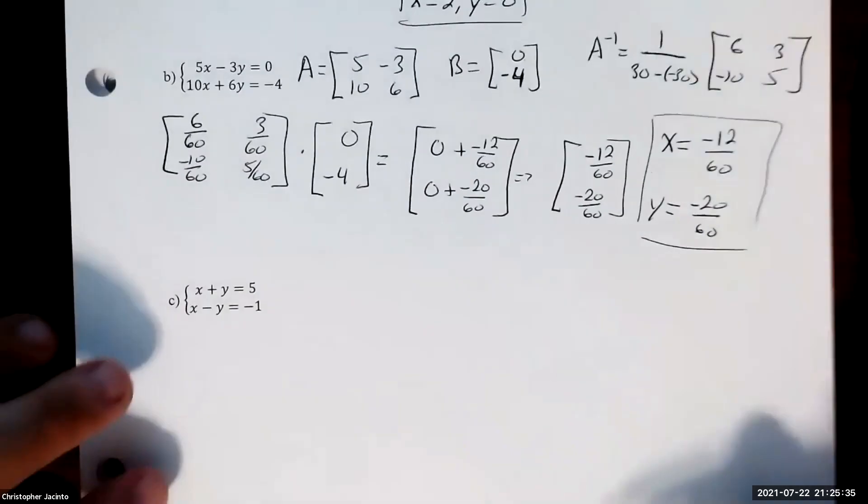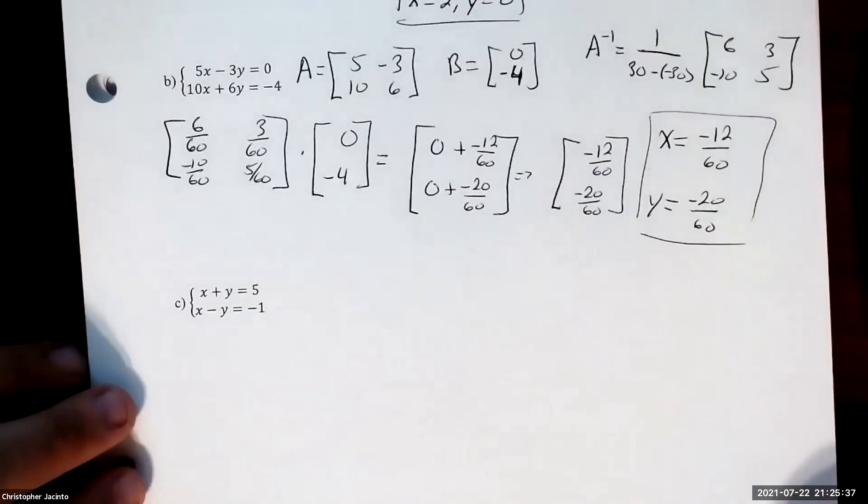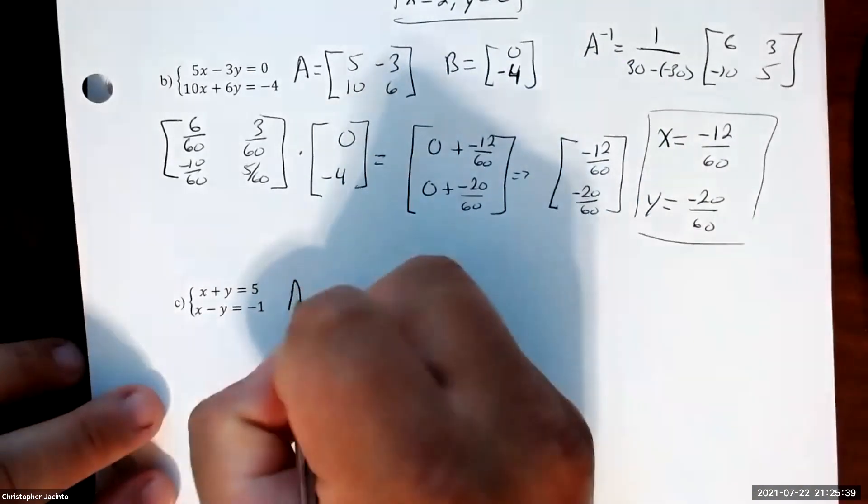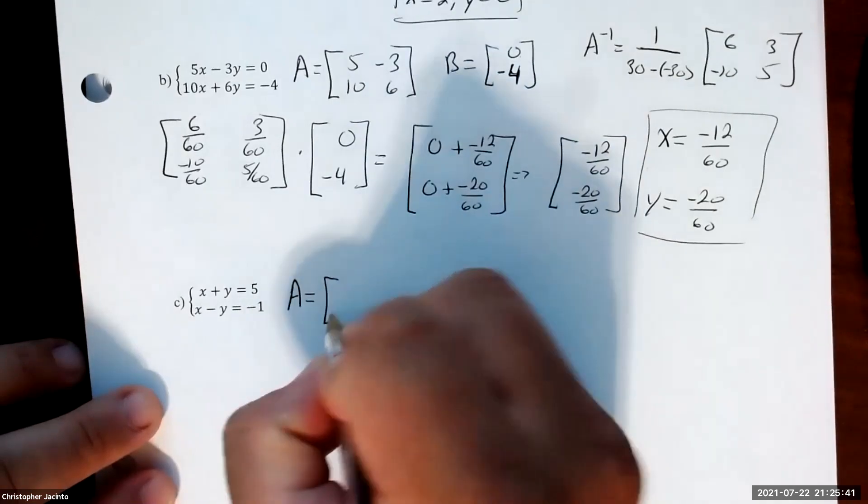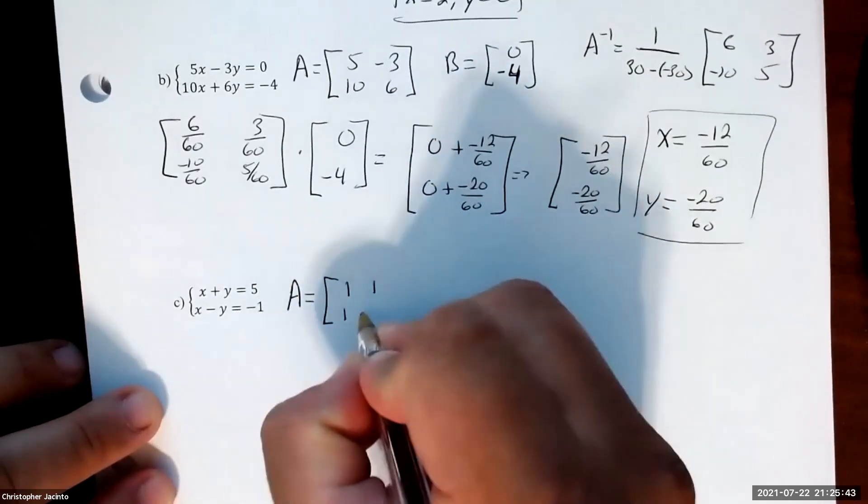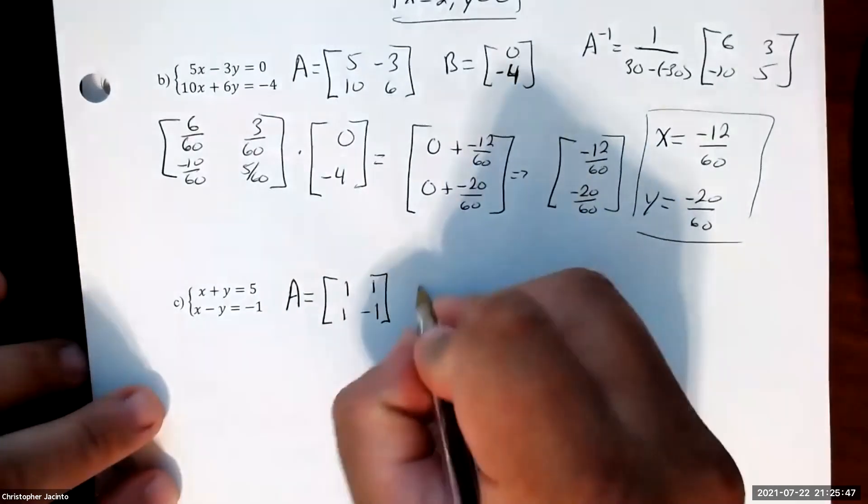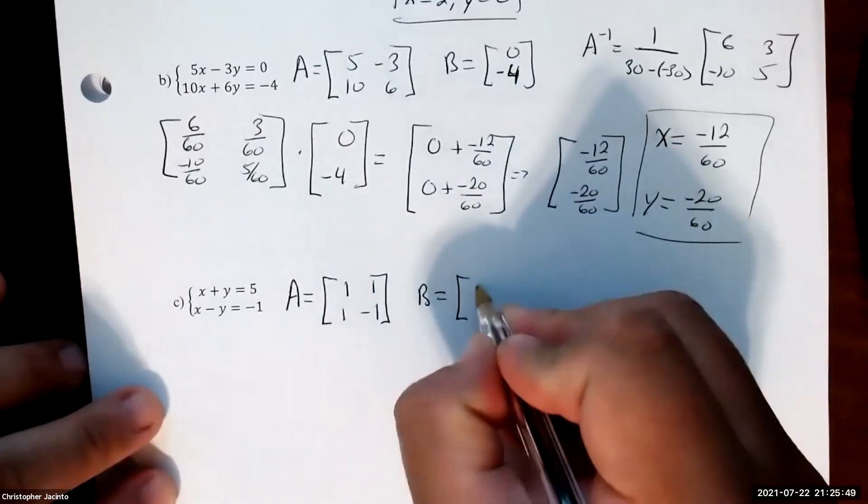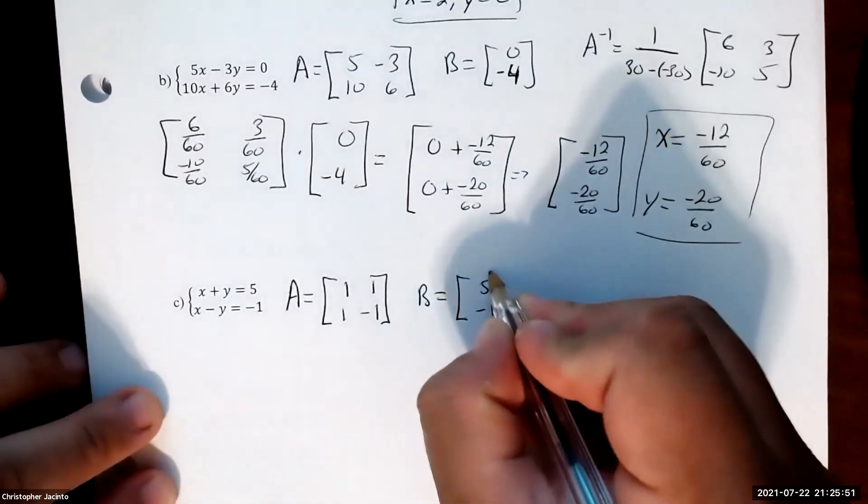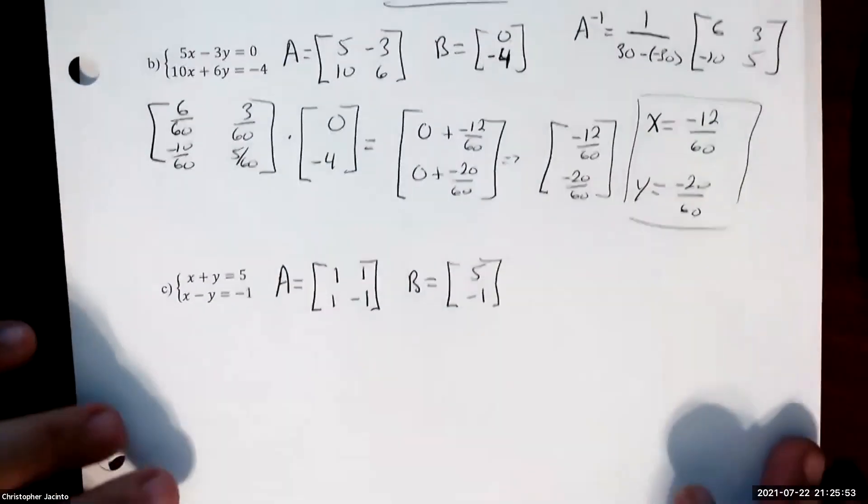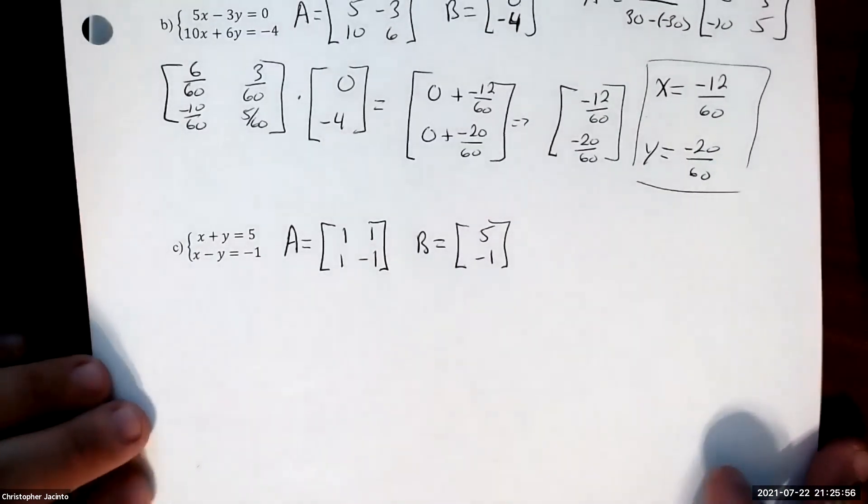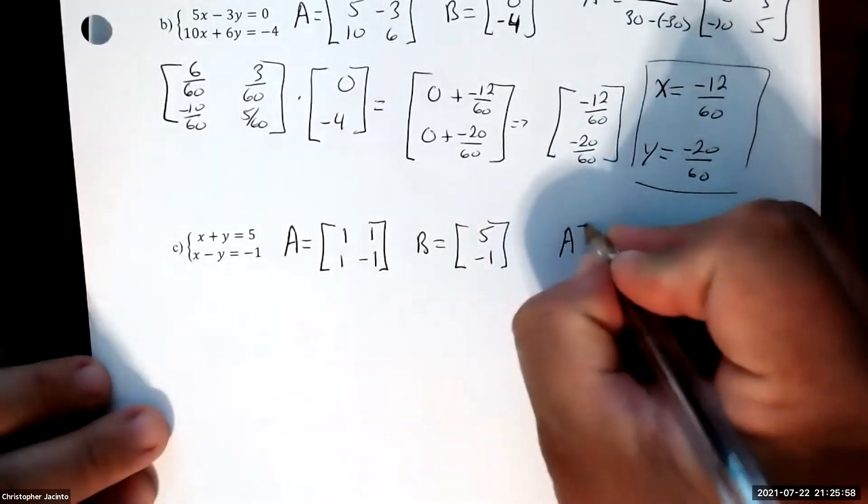Alright, in that case, let's do the last one here. So A is going to be 1, 1, 1, and negative 1. Lots of 1s. B is going to be 5 and negative 1. Alright, so first find A inverse.